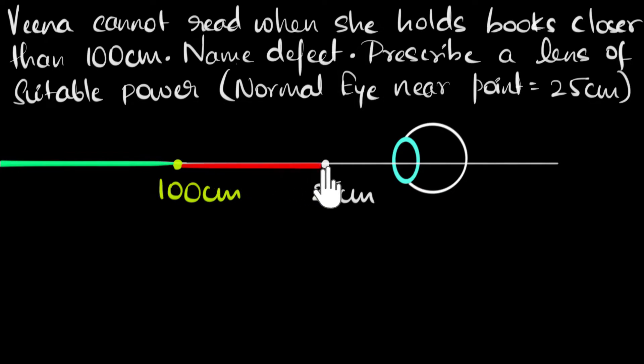I'm only going to go until 25 centimeters because closer than 25 centimeters, even a normal eye can't see it. So we don't have to worry about this region. It's only this region that Veena is unable to see, which a normal eye can, but Veena's eye cannot. So the first question is, what is this defect?